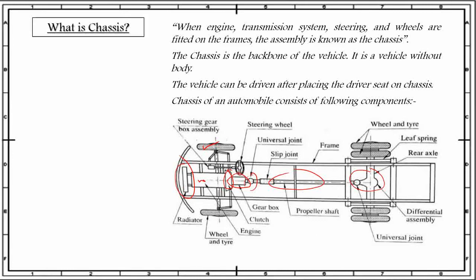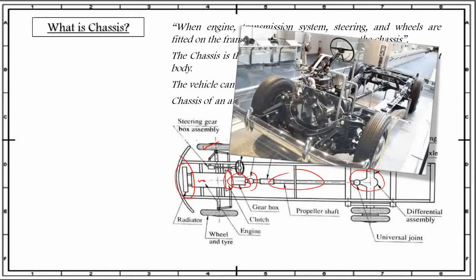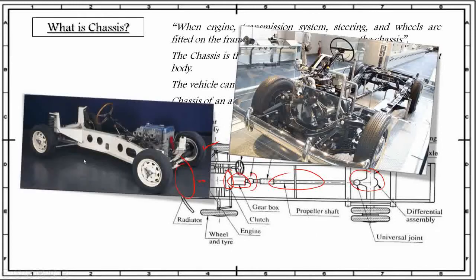Thus we can say that the chassis contains all the major units necessary to propel the vehicle, and the vehicle can be driven after placing the driver's seat on chassis. An example of a chassis is shown over here. As you can see in this figure, if you can somehow place a driver's seat over here, you can actually drive this whole car. Another example of a chassis is over here — this is a frame with all the different components placed on it to form a chassis of a vehicle. You can actually drive this one.